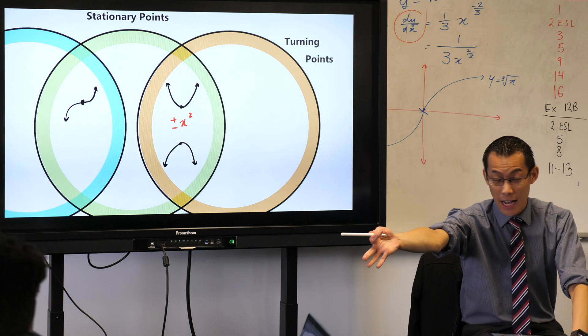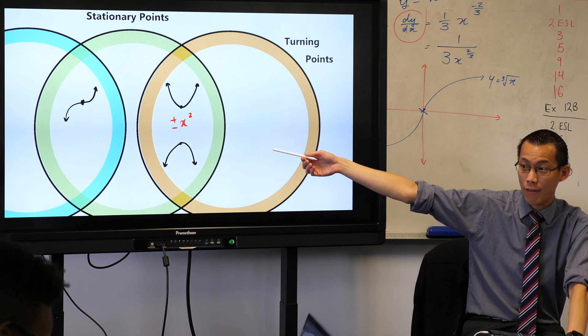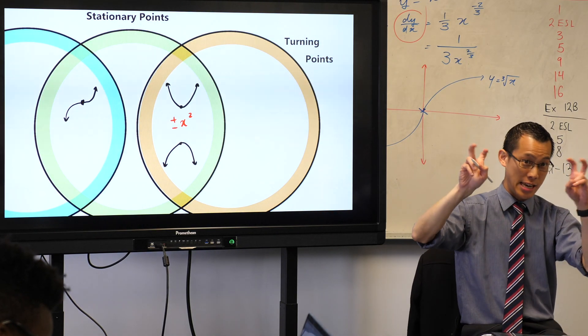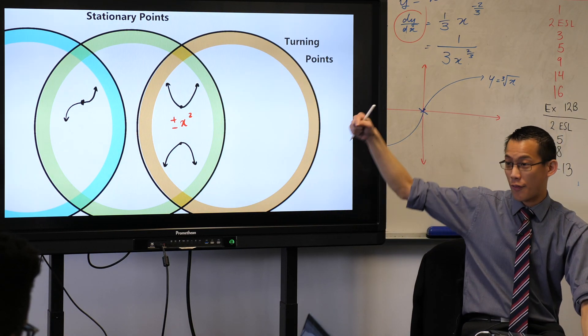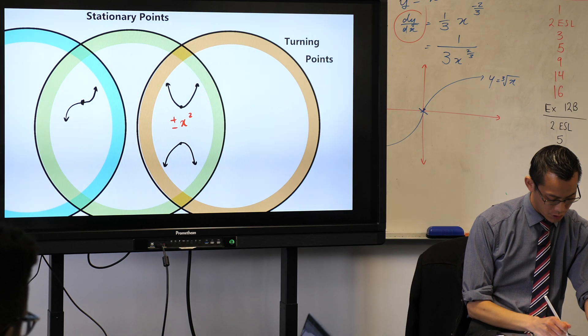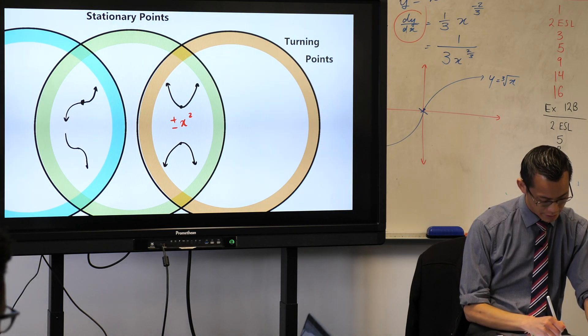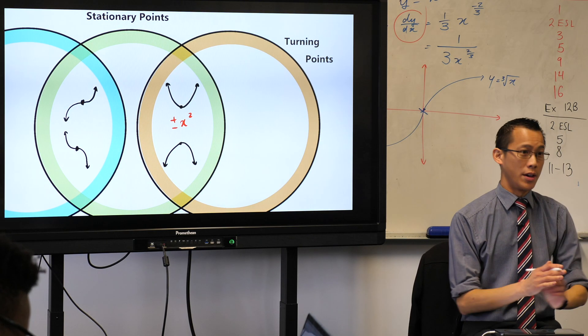Now, a perfect example of this is x cubed. In fact, that's what I was trying to mimic drawing there. So what's happening is, you're increasing, you stop for a moment, that's the stationary part, and then you just keep on increasing. You don't turn around, there's no facing the opposite direction. Of course, I could do this in the reverse order. I could decrease, and then stop, and then decrease again.